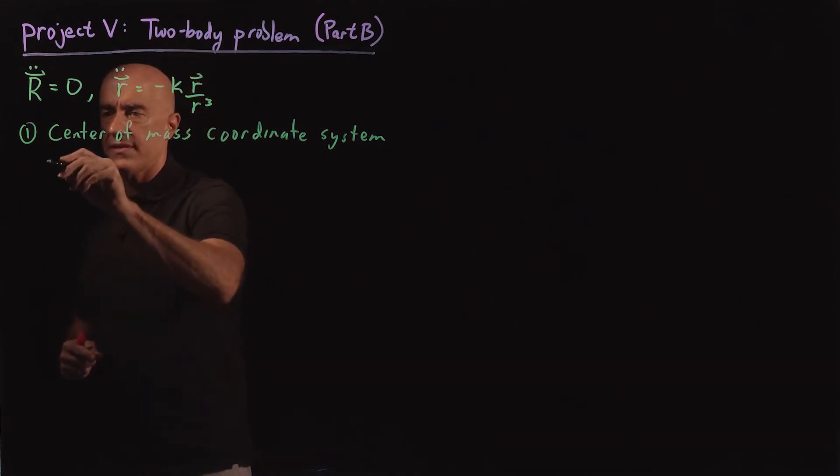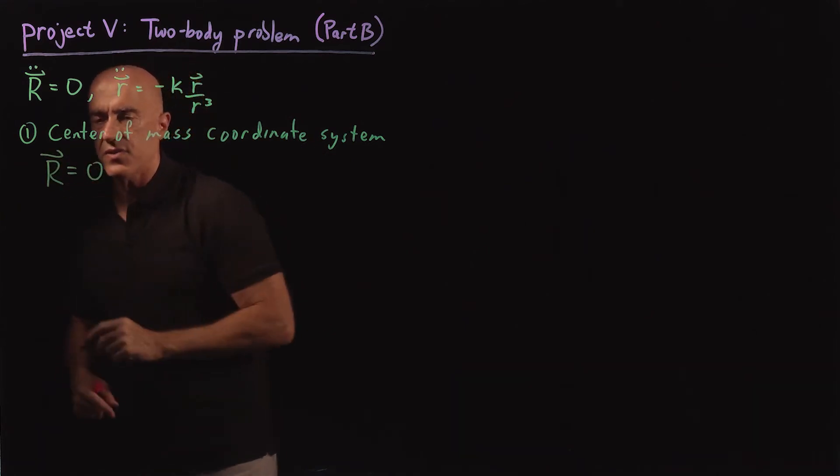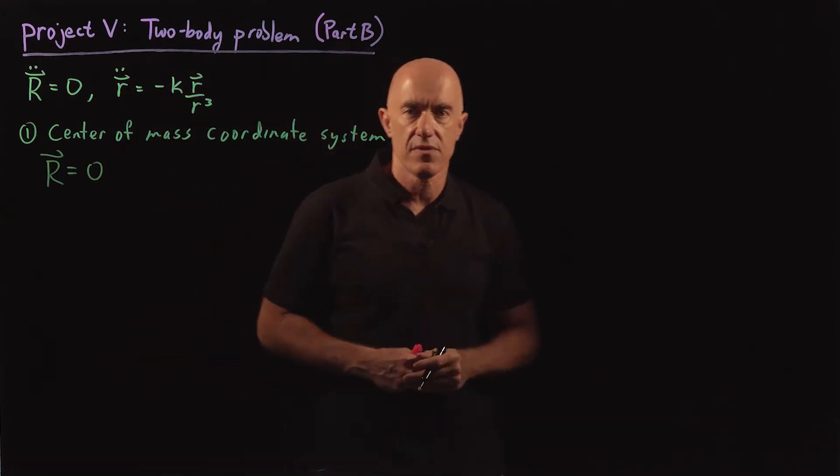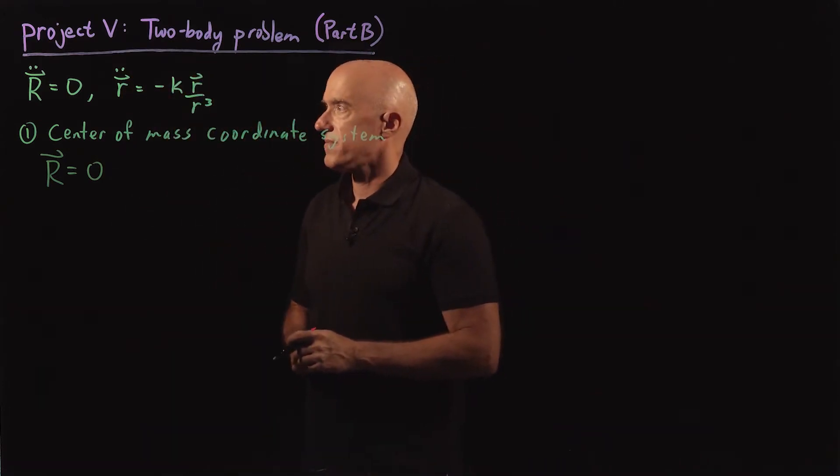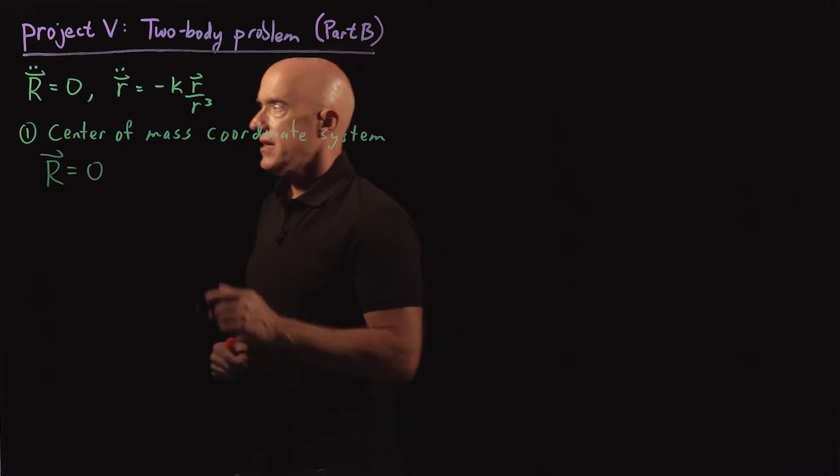So the center of mass coordinate system is the coordinate system where this r vector is just the origin, the zero vector.